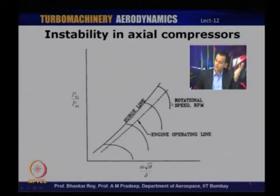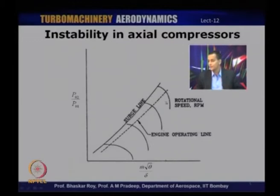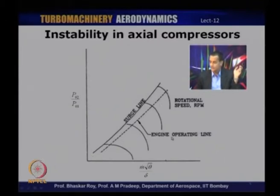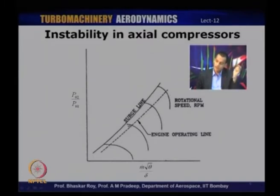A typical compressor map consists of lines corresponding to different rotational speeds. We have two limits: the choking limit on the right — beyond a certain point the mass flow rate does not change for a particular speed. On the left-hand side we have the surge line. Compressor operation to the left of this line is unstable due to surge. The dotted line shown is the engine operating line — the line the designer sets for stable operation at different speeds — and the difference between this and the surge line is the surge margin.